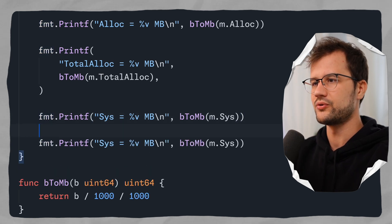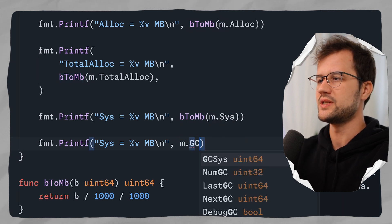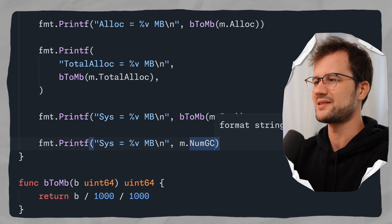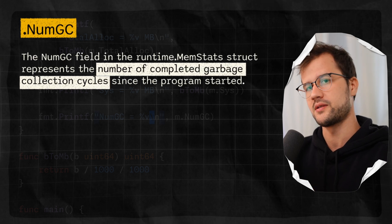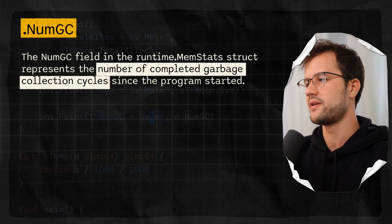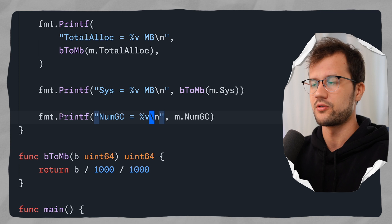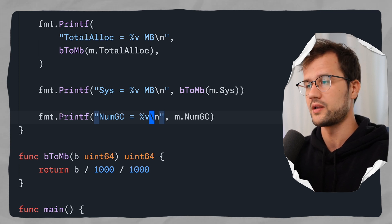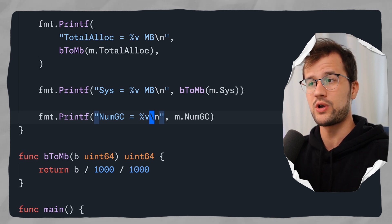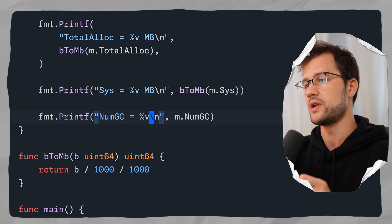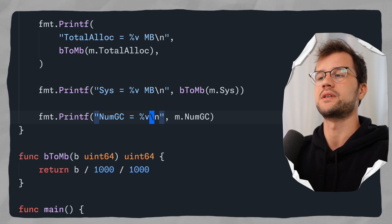The last field is NumGC, which we don't need to convert to megabytes. NumGC describes the number of completed garbage collection cycles — it increases whenever the Go garbage collector cleans up memory that's no longer being used. A use case for this field is identifying high memory pressure, since frequent garbage collections can indicate that. You can use it to collect data about garbage collection behavior.